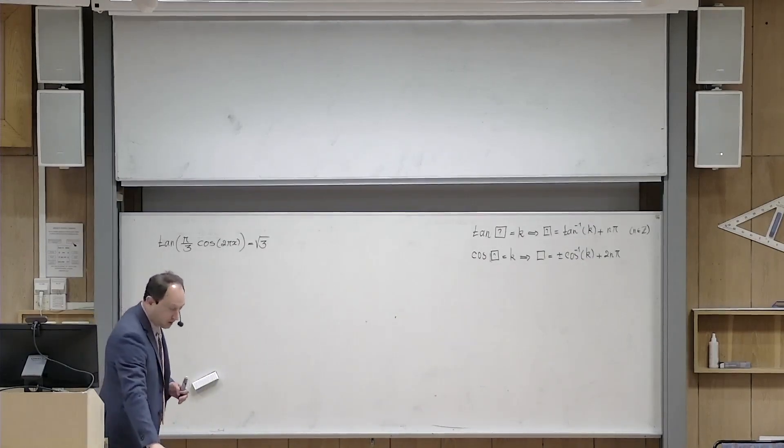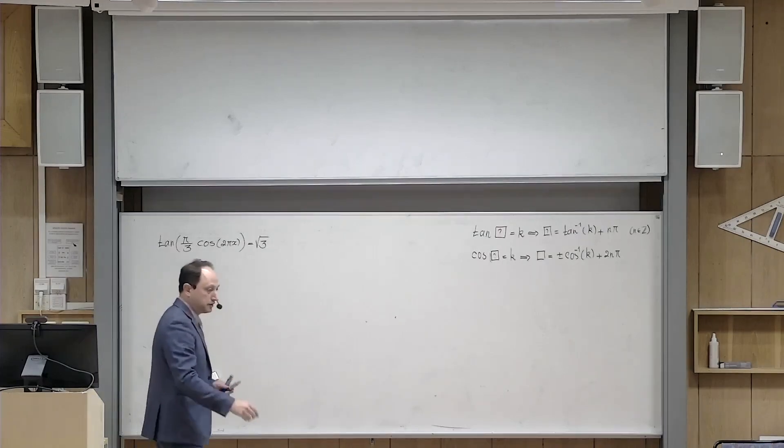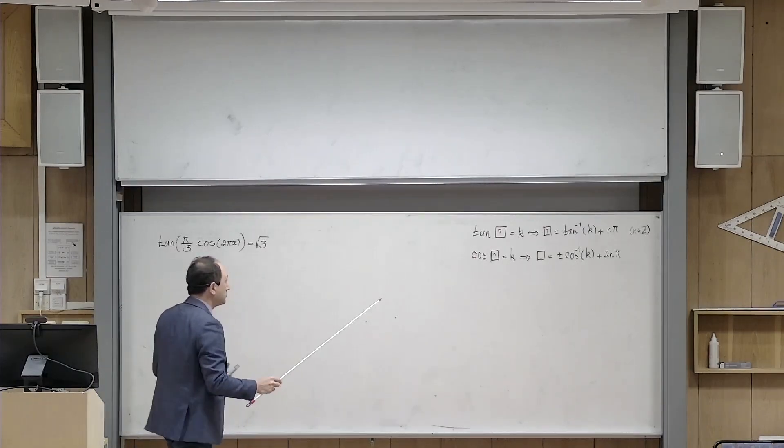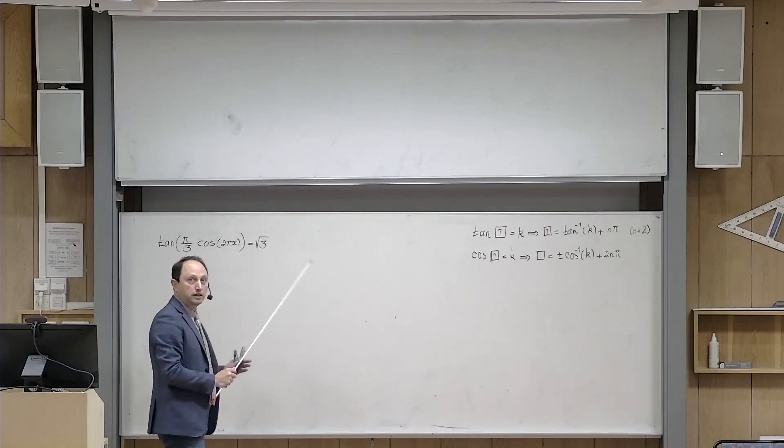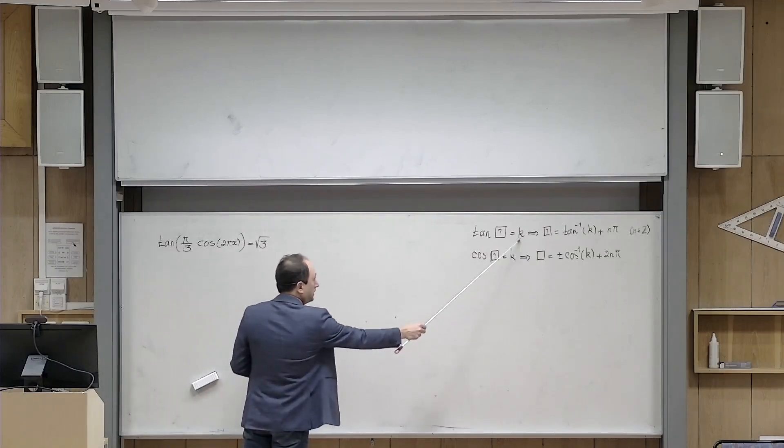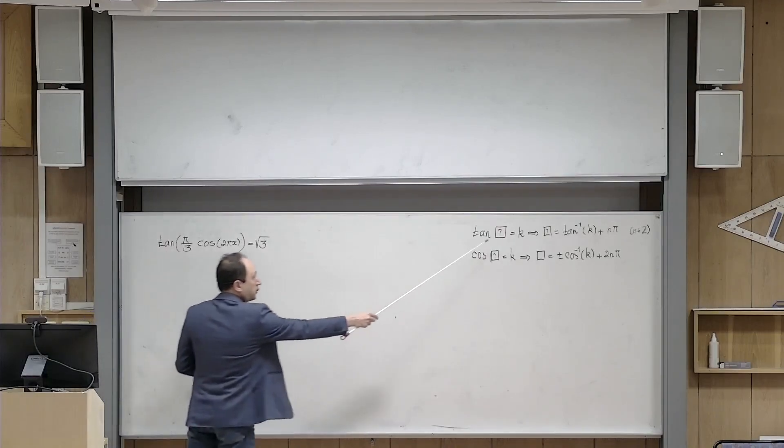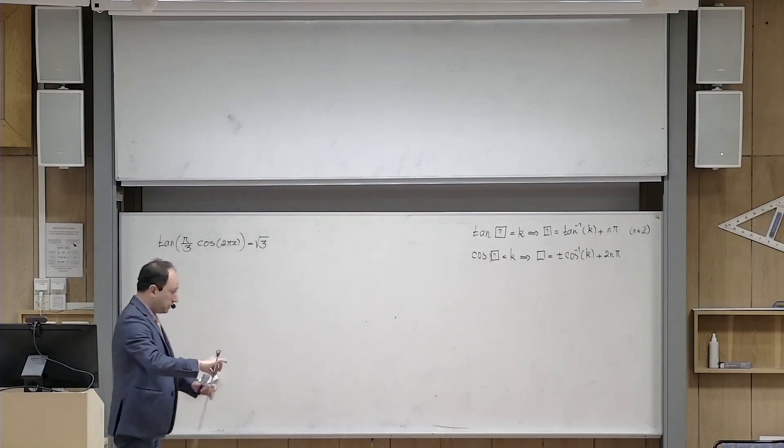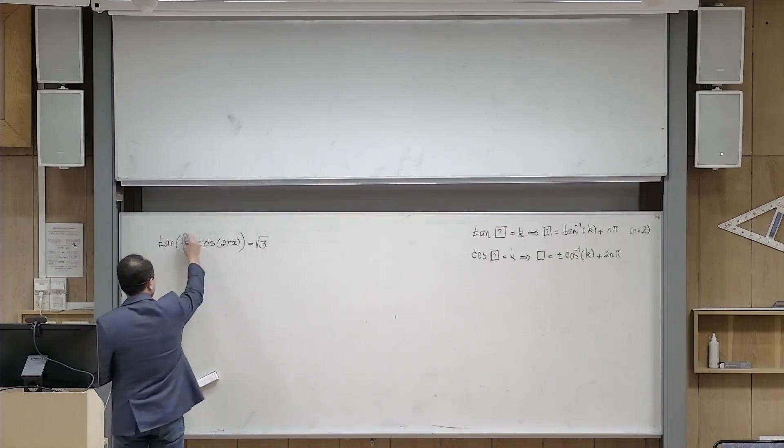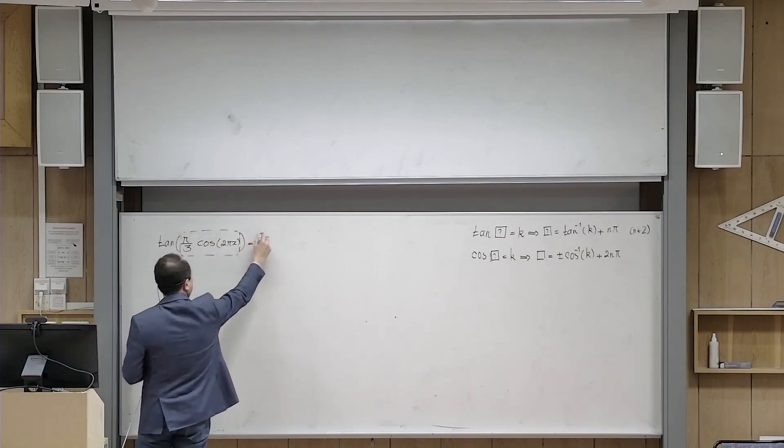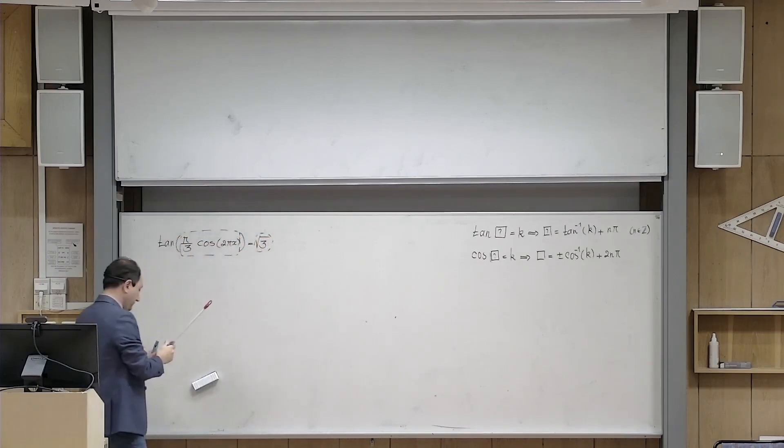These are the formulas that we will need during the solution to this problem. The first thing comes to mind, I want to use the first formula on top, and I want to give the role of 2 square root of 3 to this k, and the role of this expression inside tangent to the box. You assume that this is your box, and then this is your k value.